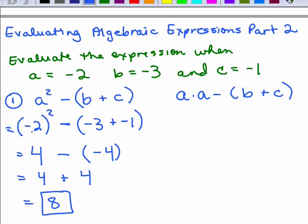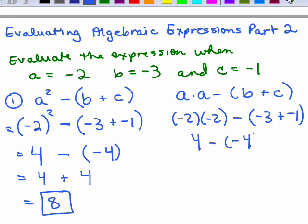You might take one more step by writing out negative 2 squared as negative 2 times negative 2. If before replacing the variables you wrote it as A times A, then you could plug in negative 2 and put it in parenthesis to show multiplication. Either way you'll still get 4 minus a negative 4, which is 4 plus 4, or 8. I suggest doing it the second way. Some people write this wrong — they put negative 2 squared and don't remember to put the negative 2 in parenthesis, so the first step would be wrong.